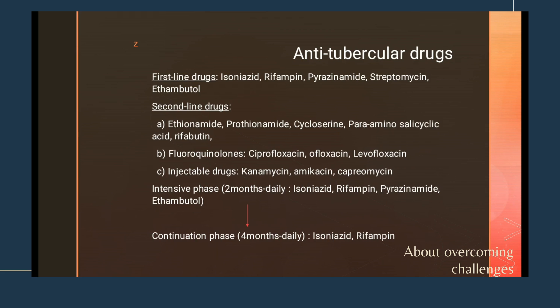The second-line anti-tubercular drugs include ethionamide, prothionamide, cycloserine, para-aminosalicylic acid (PAS), and rifabutin. Additionally, fluoroquinolones such as ciprofloxacin, ofloxacin, and levofloxacin are used. Injectable second-line drugs include kanamycin, amikacin, and capreomycin. These second-line drugs are used when the patient does not respond to first-line treatment.